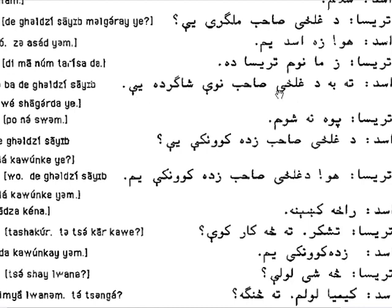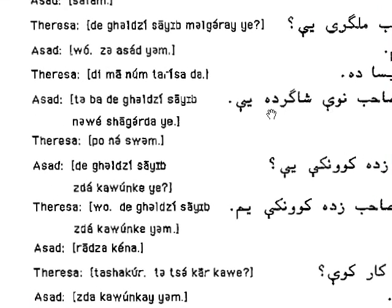'Ta' means 'you.' 'Ba' is of course a particle which we'll review in the future. 'Ghilzai saib' means 'Sir Ghilzai.' 'Noe' means 'new' — just like the English 'new.' Due to the Indo-European origin of both Pashto and English, there are root word similarities. 'New' in Pashto is a cognate of 'new' in English. 'Shagir da yeh' means 'you are a student,' similar to the old English 'yeh,' 'thee,' or 'thou.'